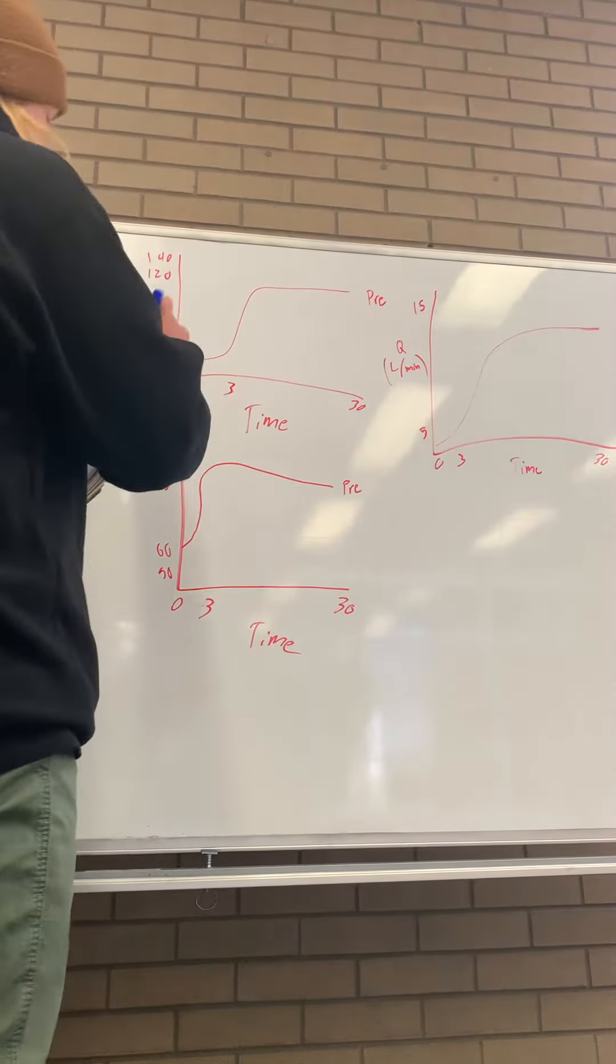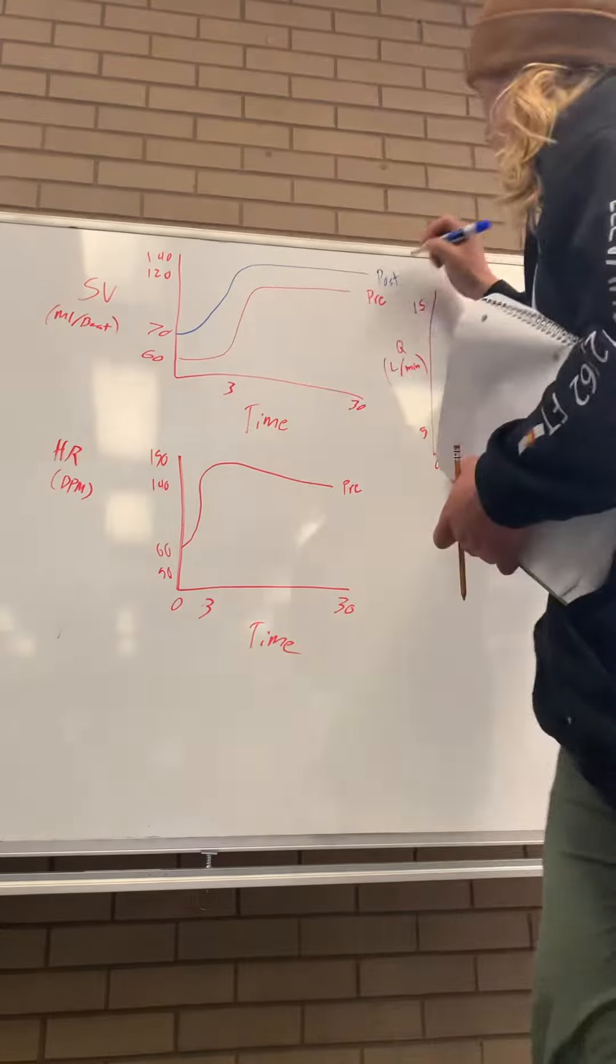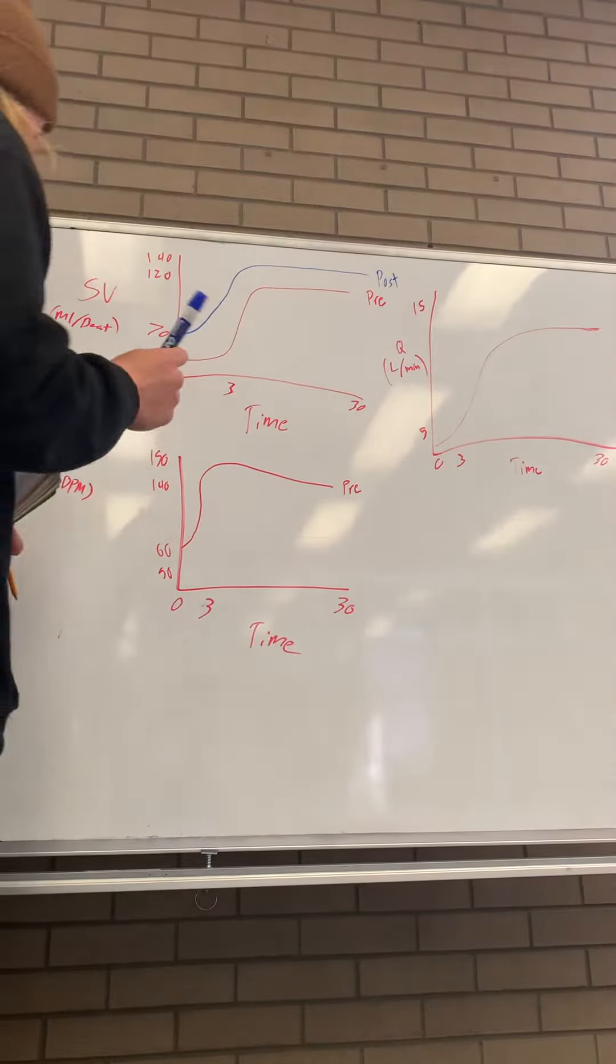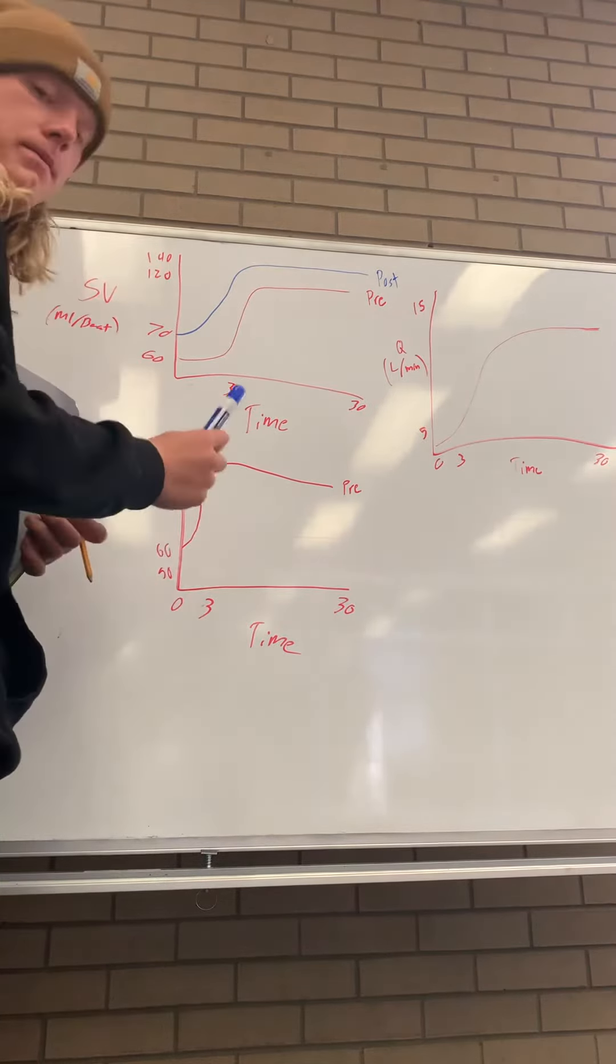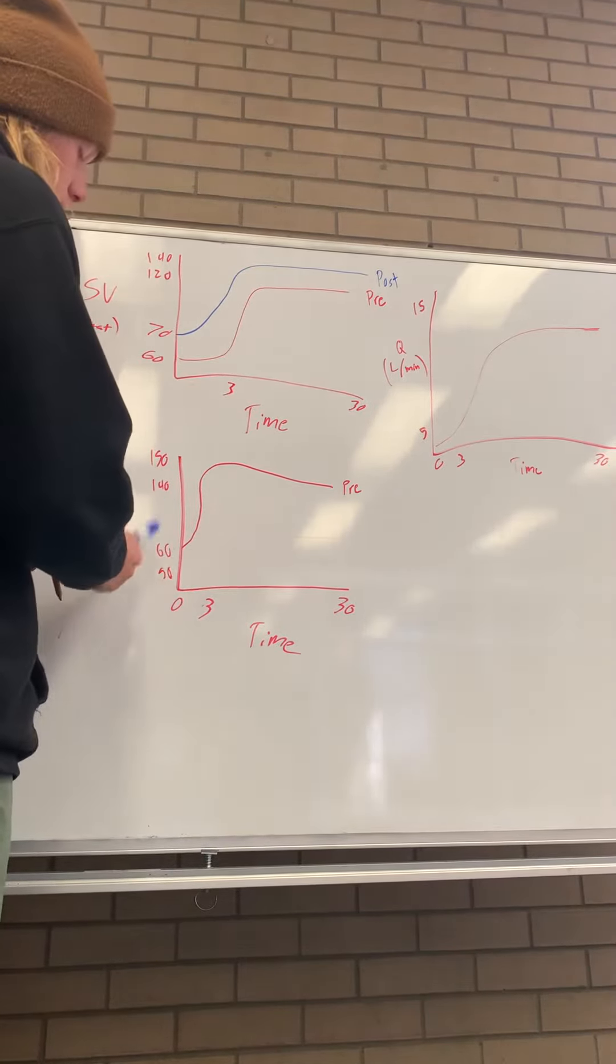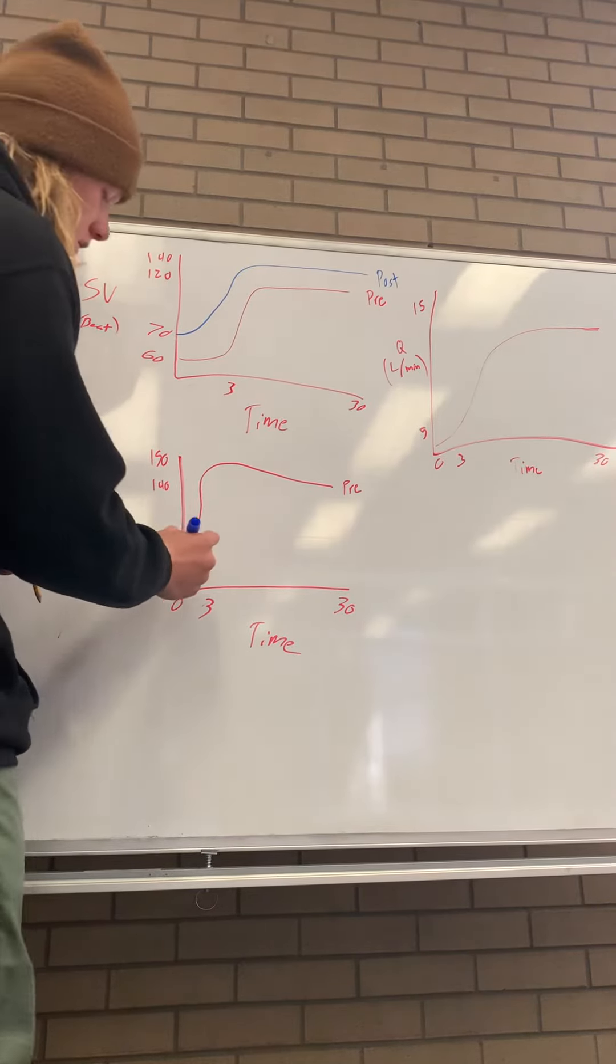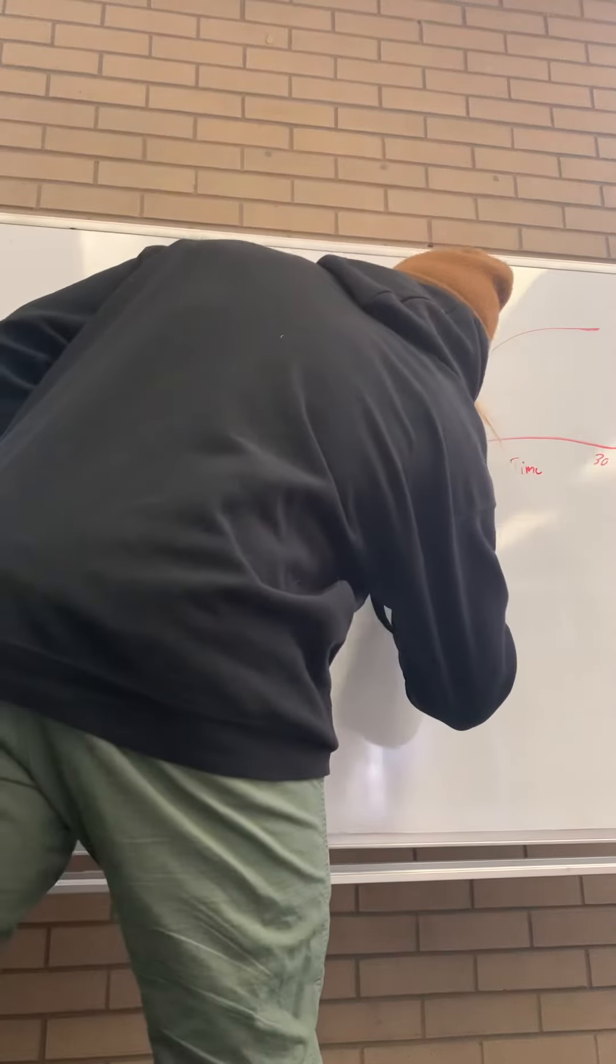You start around 70 and go to 140, so that's post-trained. But on the contrary, with heart rate, which is beats per minute over time, a pre-trained person is going to have more beats per minute starting off and finish with a higher beats per minute than someone who's post-trained.